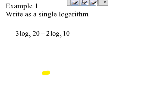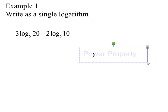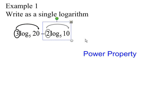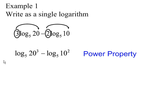Here's our first example. Write as a single logarithm: 3 log base 5 of 20 minus 2 log base 5 of 10. To begin, we're going to use the power property. The power property is going to allow us to move that 3 and make it an exponent of 20, and to take that 2 and make it an exponent of 10. That gives us log base 5 of 20 to the 3rd minus log base 5 of 10 to the 2nd.